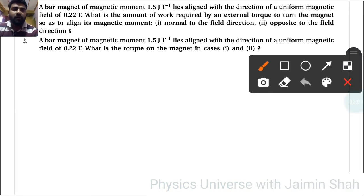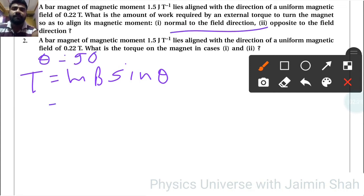What is the torque on the magnet in each case? So torque formula is τ = mB sin θ. For first case normal, θ = 90 degrees, so we know that mB is 0.33 × sin 90. Sin 90 is 1, so 0.33.